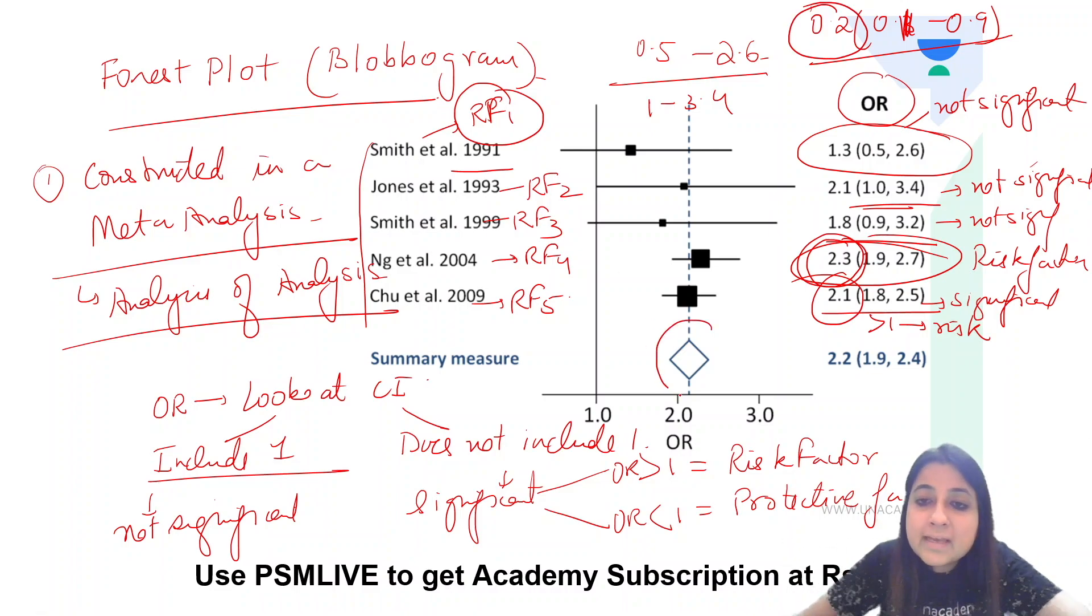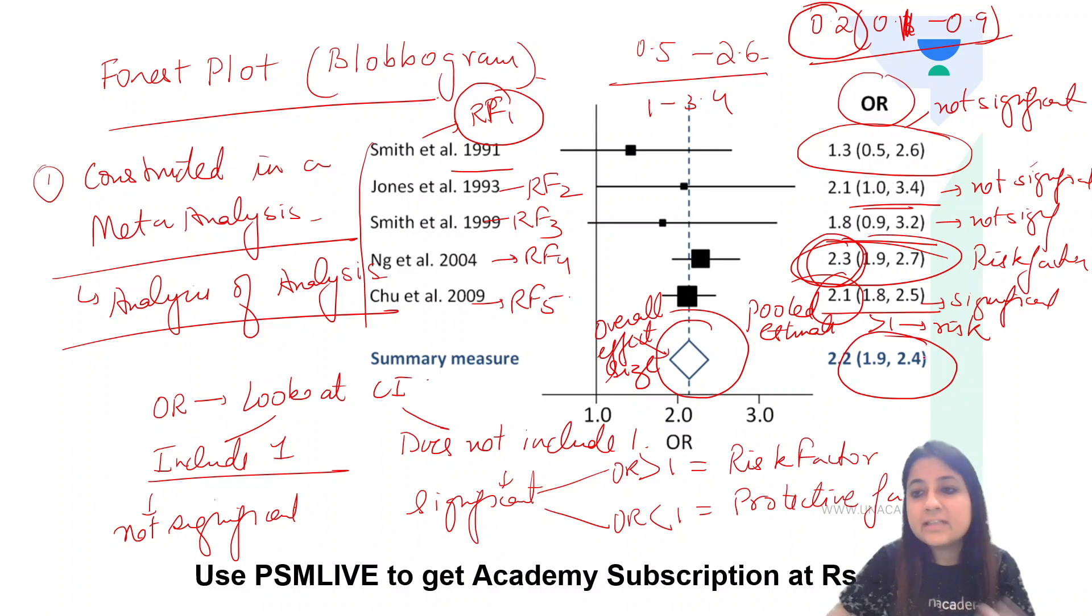Now, always look at the diamond. The diamond provides you with the overall effect size or it provides you with the pooled estimate. If you look over here, range 2.2, confidence interval 1.9 to 2.4. One is not included, so it is statistically significant. And overall, the effect of risk factors on cancer shows a significant association.